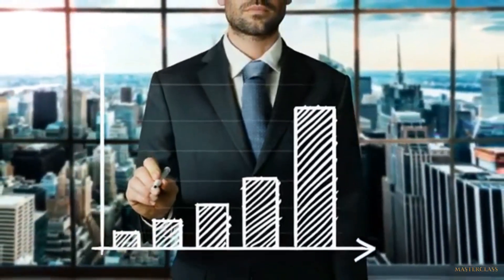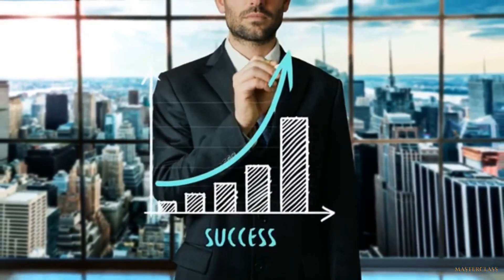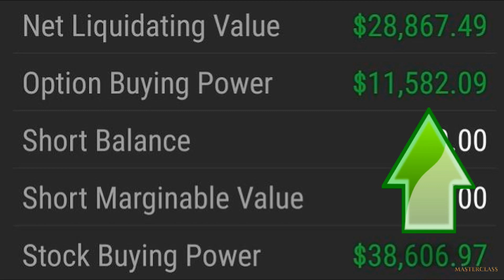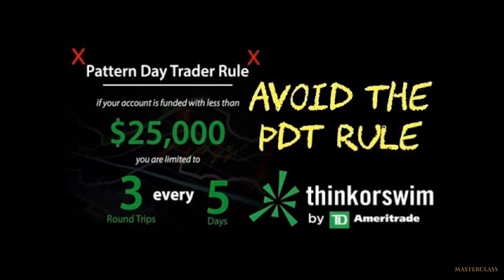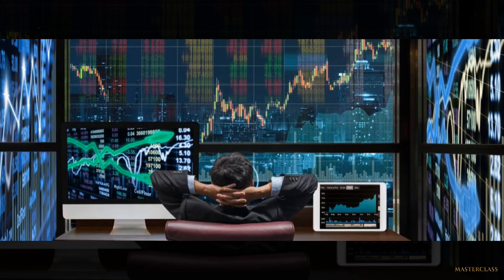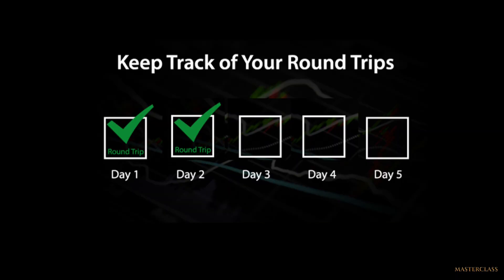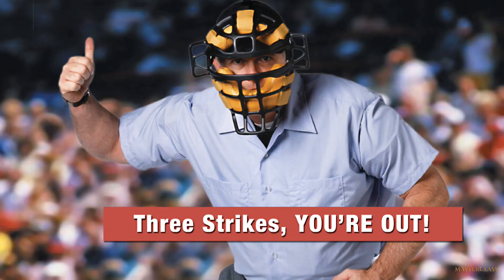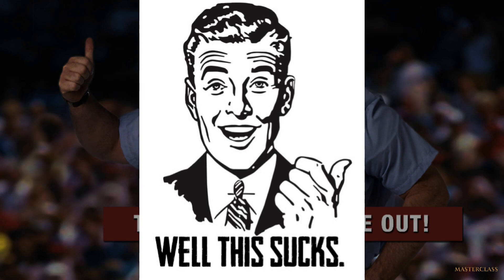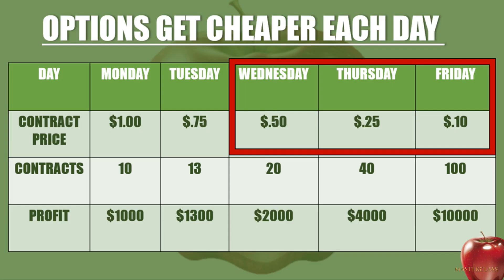You just need approval for options trading, and we will help minimize your risk. Once you fund your trading account, you can trade as often as you desire as long as funds are available. If you fail to establish a cash account and have less than $25,000 to trade, you will be subjected to the three-day-trades-per-week rule. Trading with only three trades a week is very challenging given the plethora of daily opportunities. Wednesdays, Thursdays, and Fridays are the best days to trade weekly options contracts.